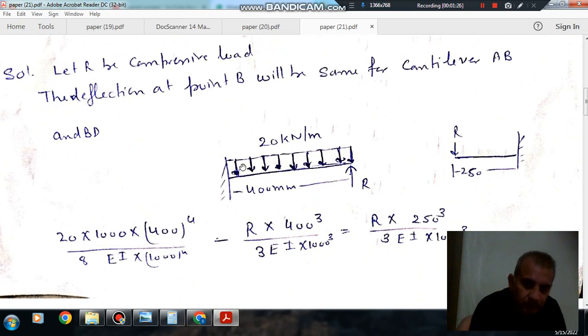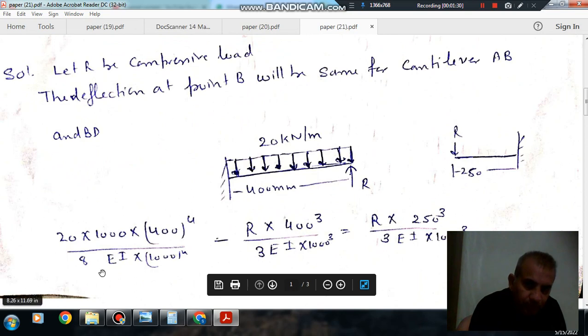Deflection at B due to uniform distributed load is WL^4 by 8EI, converting mm into meter, plus deflection at B is RL^3 by 3EI.